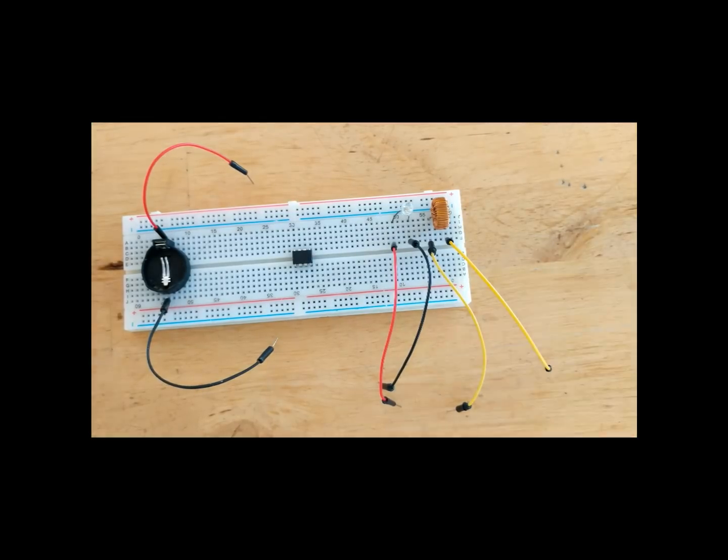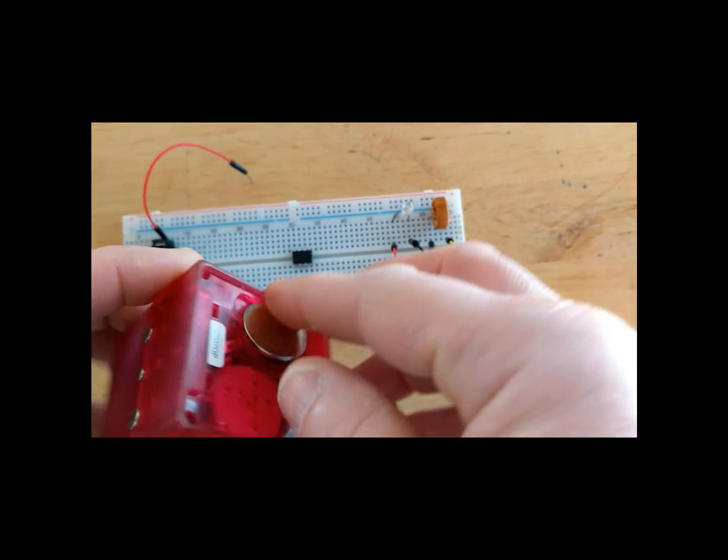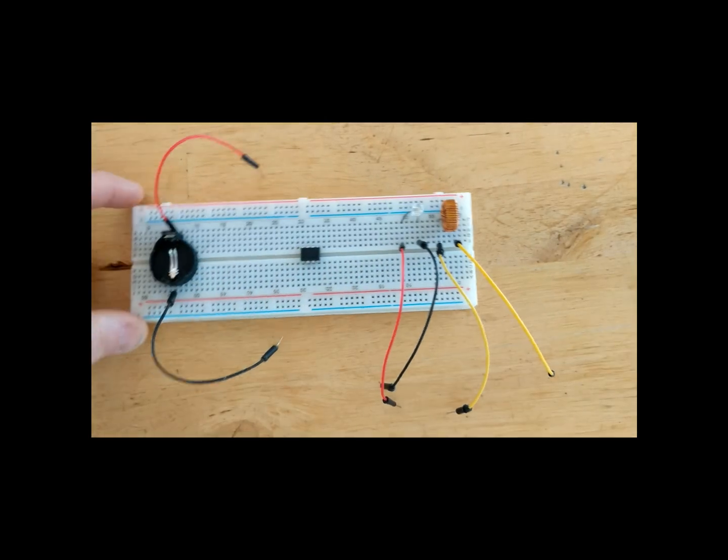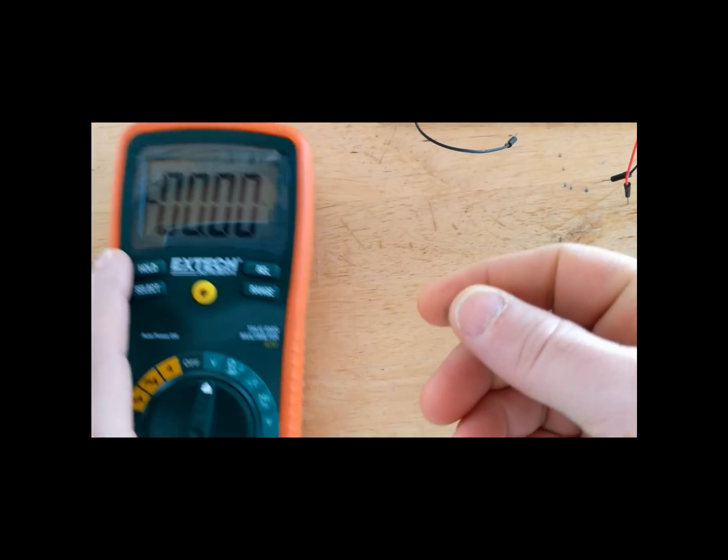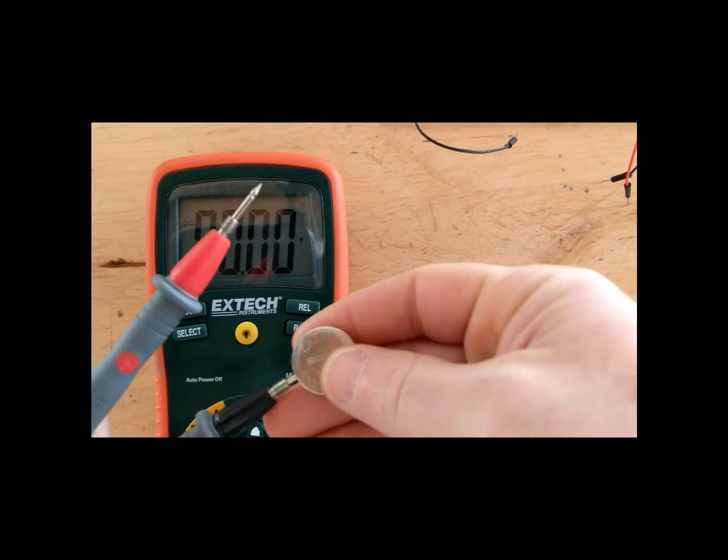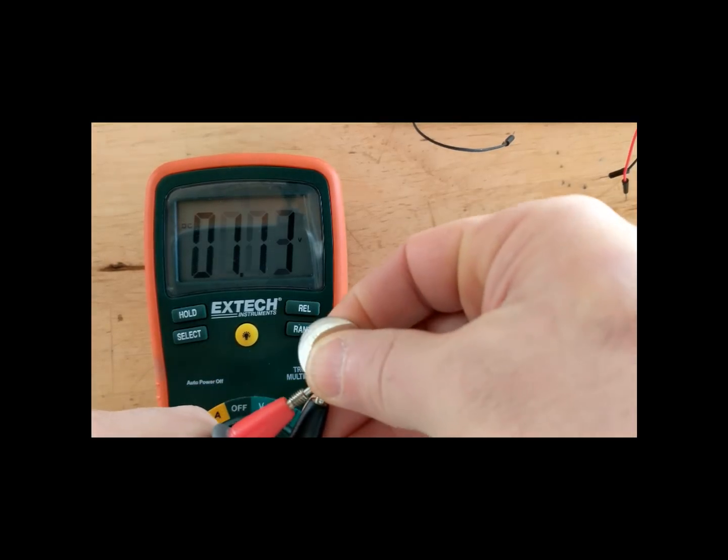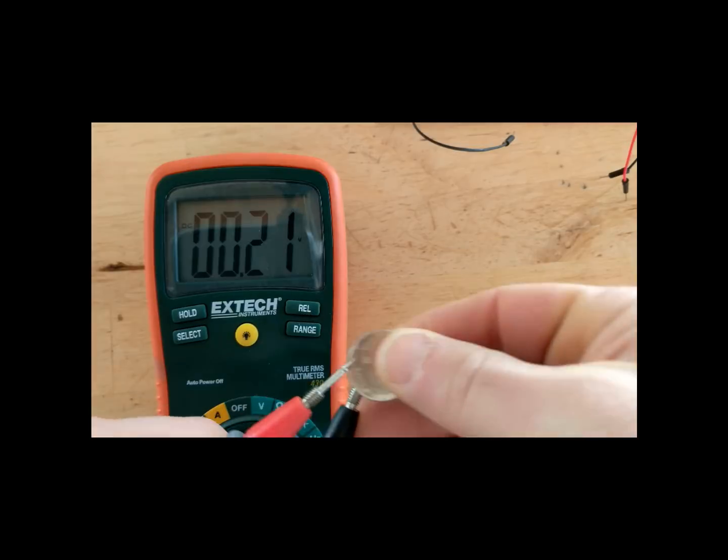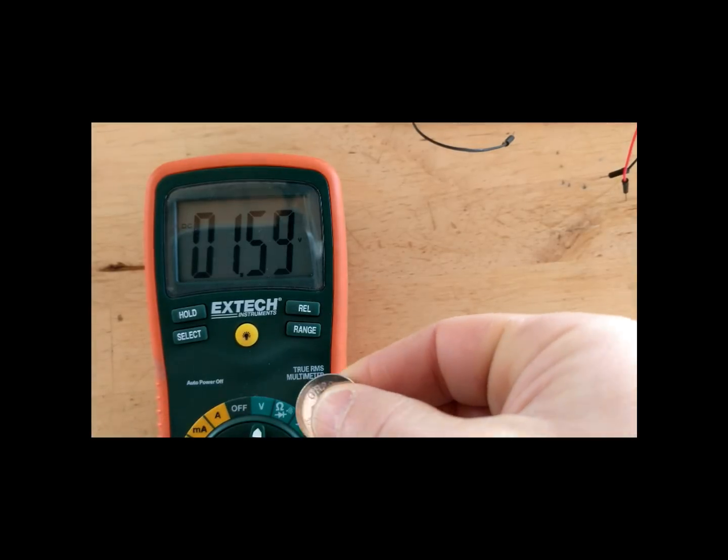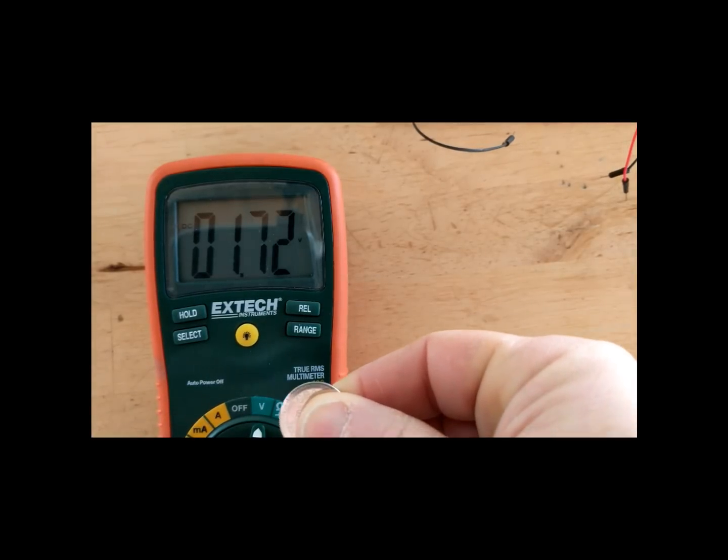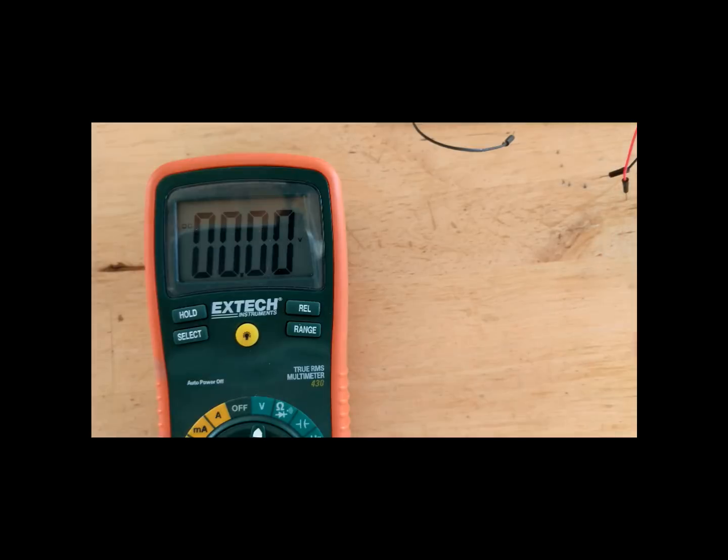And for a power source, we're going to be using a dead battery. Let's just check that battery to see how dead it is. Wow, that is really dead. That battery is at around 1.7 volts. So that is a stone dead battery.